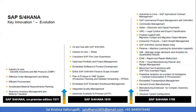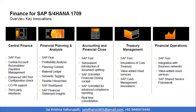S4 HANA 1709 also contains a central master data repository where you can store all business partner, GL account, material, and article data in the core system itself, which removes the requirement for a separate MDM system. The key finance innovations can be broadly divided into five heads: central finance, financial planning and analysis, accounting and financial close, treasury management, and financial operations.